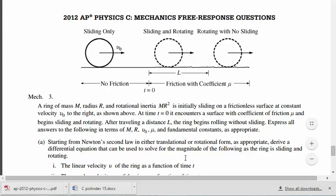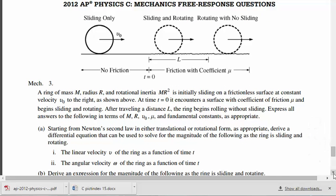A says starting with Newton's second law. Hopefully you know what that means. What does that mean? Yes, a net force is equal to mass times acceleration. Or in either translation form, which is M times A, or rotational form, tau equals I alpha. Very good. So we want to derive a differential equation that can be used to solve for the magnitude of the following as the ring is sliding and rotating. So this middle bit, the linear velocity v and the angular velocity omega. So you're told to start with Newton's second law. So if that is the sum of the forces or the sum of the torque, what do you have to do before you can do summing forces and summing torque? Free body diagram.